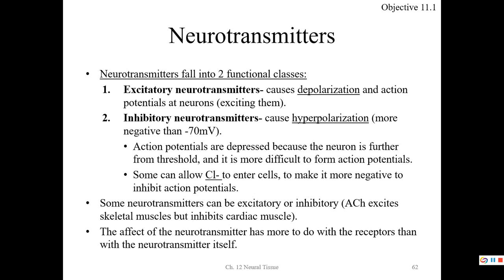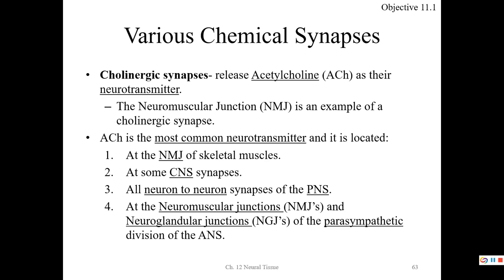Cholinergic synapses release the neurotransmitter acetylcholine. The cholinergic synapse model is the neuromuscular junction. Acetylcholine is by far the most common neurotransmitter in vertebrates and invertebrates — at NMJs of skeletal muscles, CNS synapses, all neuron-to-neuron synapses in the PNS, neuromuscular junctions, neuroglandular junctions, and the parasympathetic nervous system, which relies completely on acetylcholine.